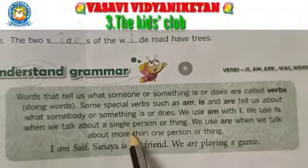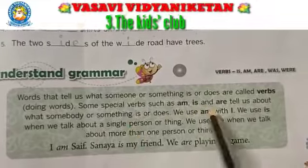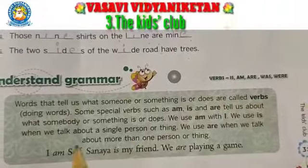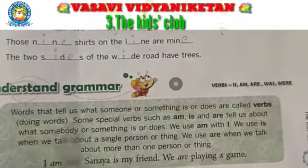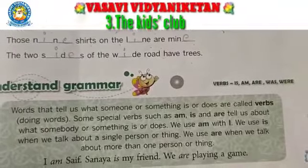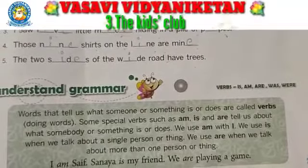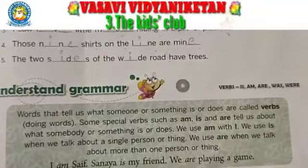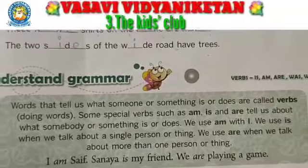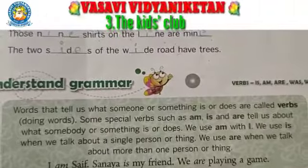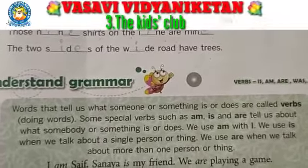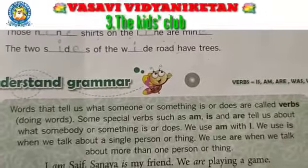Now, understand the grammar — just one point I will tell you briefly. Words that tell us what someone or something is or does are called verbs. Going, eating, writing — these are doing words, and they are called verbs.